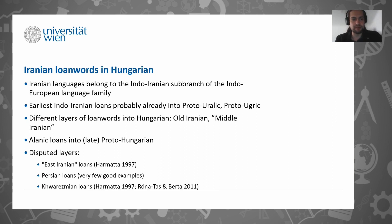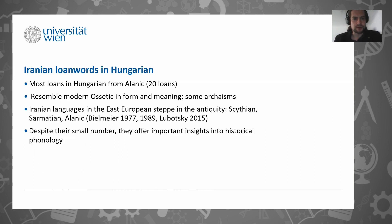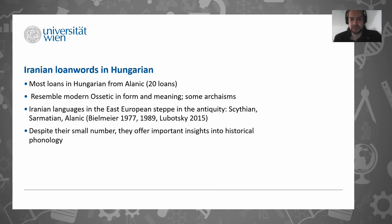About Iranian loanwords in general very briefly: the main thing is that there are several layers and we are now concentrating on the Alanik layer. Alanik is either the ancestor of the Ossetic language or very closely related to Ossetic at least. Ossetic is spoken today in the Republic of Georgia, in the South Ossetic region and also in North Ossetic region, which is rather Russia. But we know from historical sources that the area where Ossetic and the ancestral form Alanik was spoken was much, much larger.